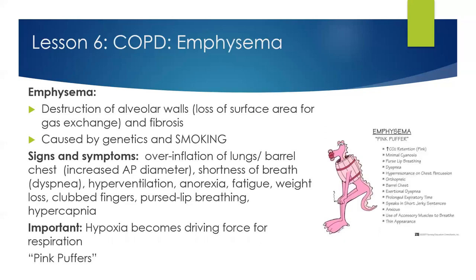COPD gets pretty complicated. The first associated condition is emphysema. It's really important to remember that emphysema is destruction of the alveoli — all the way down in those alveolar walls. Symptoms include pursed-lip breathing, shortness of breath, tachypnea or fast breathing, with a really prolonged expiratory phase. These are the pink puffers. They have a barrel chest and exertional dyspnea. Hypoxia becomes the driving force for respirations in a person with emphysema.